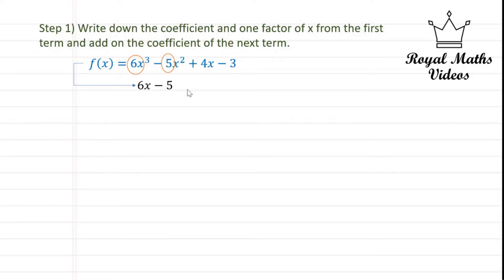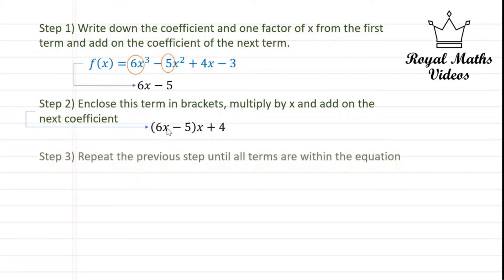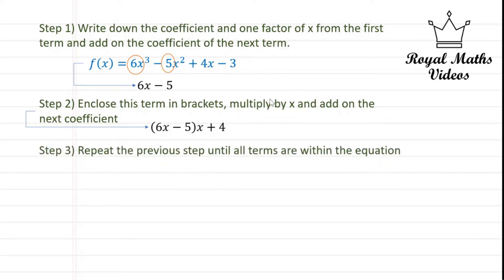Step 2 will be to enclose this term in brackets, so 6x - 5 will be in brackets, and multiply by x and add on the next coefficient, which is 4. So it'll be (6x - 5)x + 4, which comes from here.